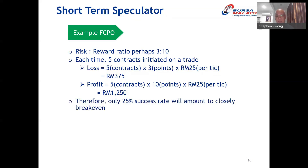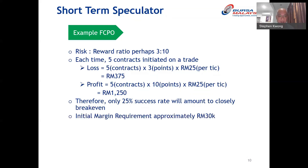Putting that in a percentage perspective: you have a 25% success rate to break even. If you make 1 profitable trade out of 4, that profit alone will bring you even again. So if you have 2 or 3 out of 4 profitable trades, you're really in the money. These are the mathematics that give you a rough idea of what to expect when trading as a scalper.